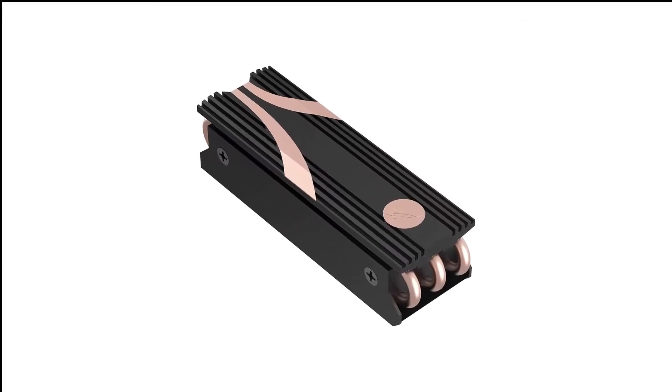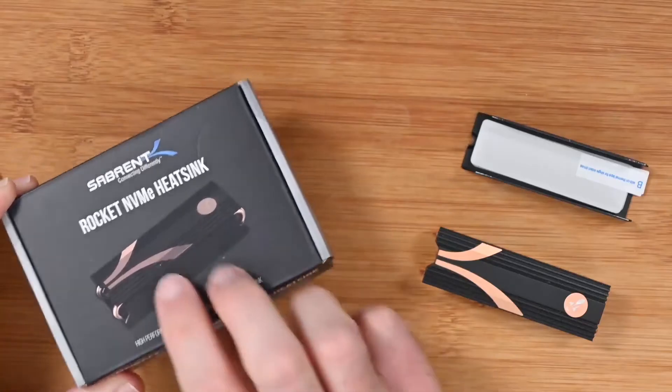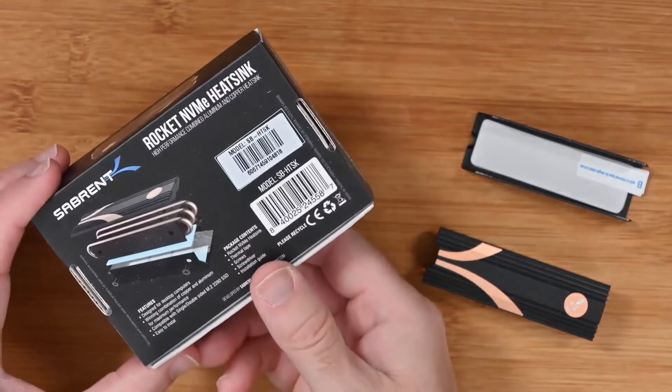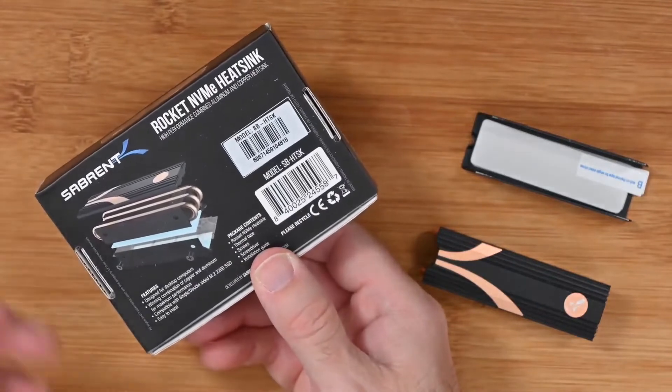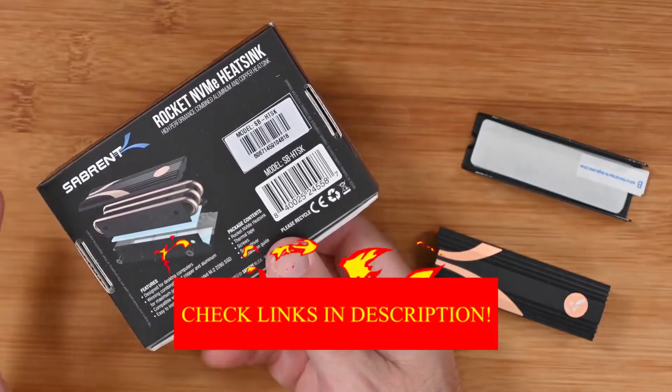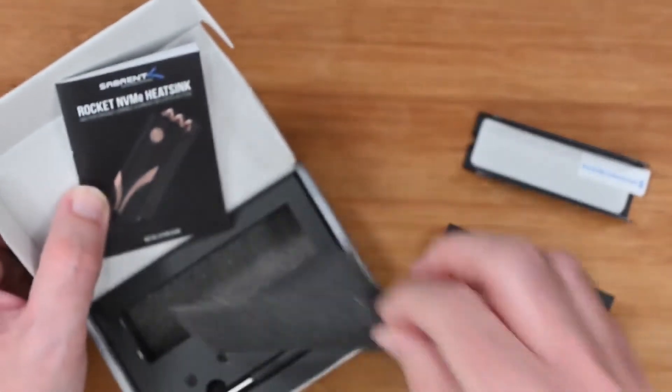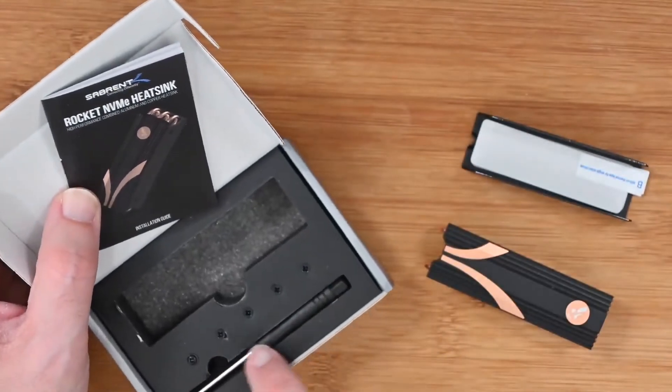Number 2 in my list is Sabrent M2 2280 SSD Rocket Heatsink. You might know about Sabrent as a brand because they are the makers of one of the best-selling PCIe 4.0 SSDs on the market nowadays, but they also make one of the most heavy duty NVMe heatsink models which carries the same name, Rocket.